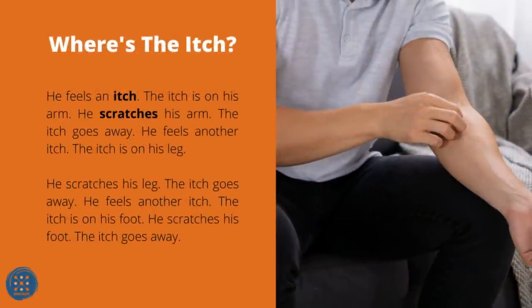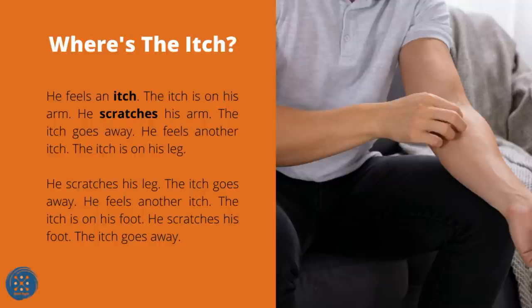Where's the Itch? He feels an itch. The itch is on his arm. He scratches his arm. The itch goes away. He feels another itch. The itch is on his leg. He scratches his leg. The itch goes away. He feels another itch. The itch is on his foot. He scratches his foot. The itch goes away.